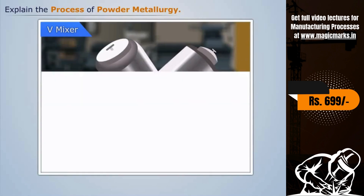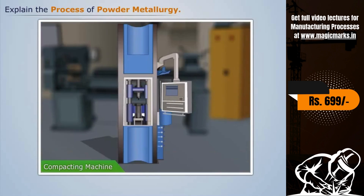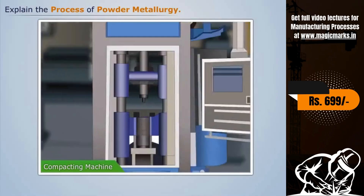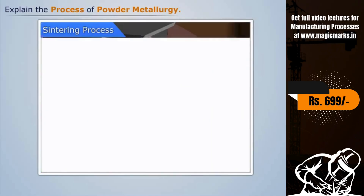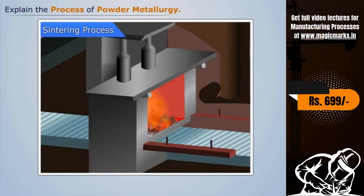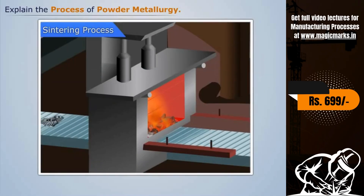In the third step, the blended materials are then compacted. Compacting is done by compressing the blended material in dies under high pressure. Now the semi-finished product produced after compacting has very less strength.